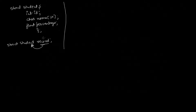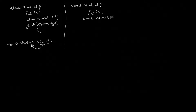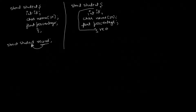Instead of doing this separately, we can also declare variables within the structure. So if we do struct student with int id, char name[20], float percentage, then after the closing brace I can just write 'record' here. That means this record variable is of type student.